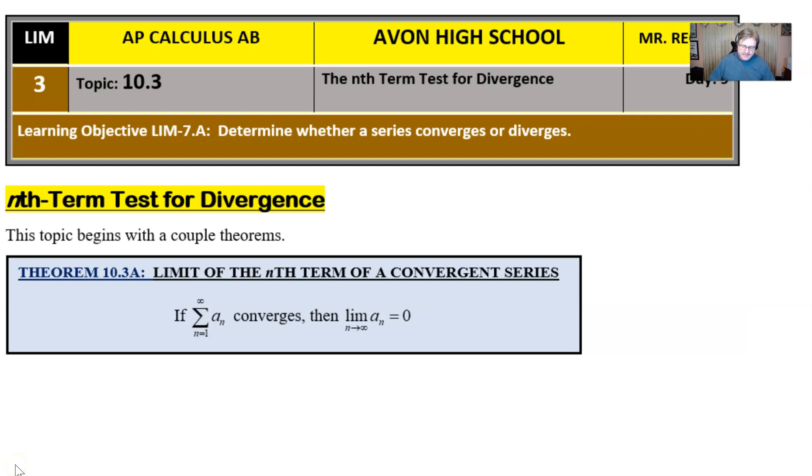So let's take a look and see what the notes say here. We start this with a couple of theorems, and I'm just going to throw this one at you that I've entitled theorem 10.3a, the limit of the nth term test of a convergent series. It says that if the summation of a sub n as n goes from 1 to infinity converges, then the limit as n approaches infinity of that nth term expression, that little formula here for a_n, would certainly indeed have to equal zero.